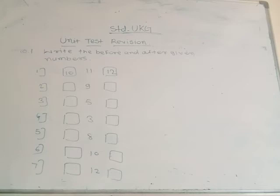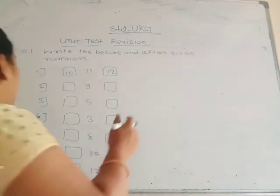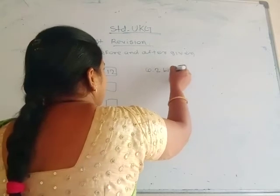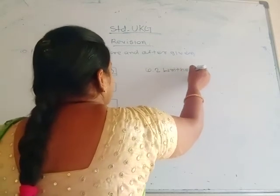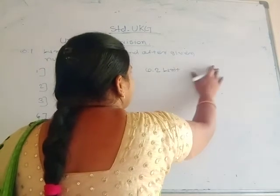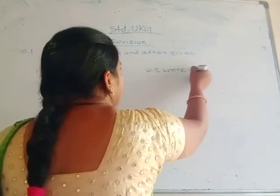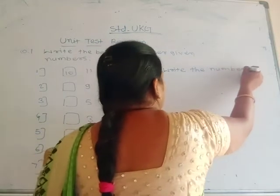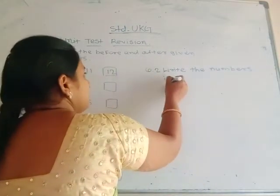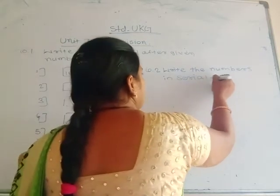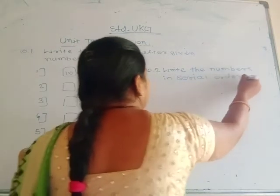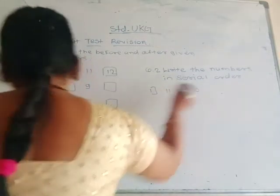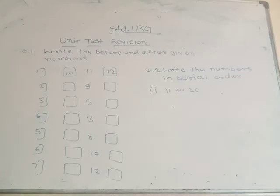Then the second question: write the numbers in serial order. Question 2: write the numbers in serial order. For this question, you write 20 numbers. These numbers are in serial order.